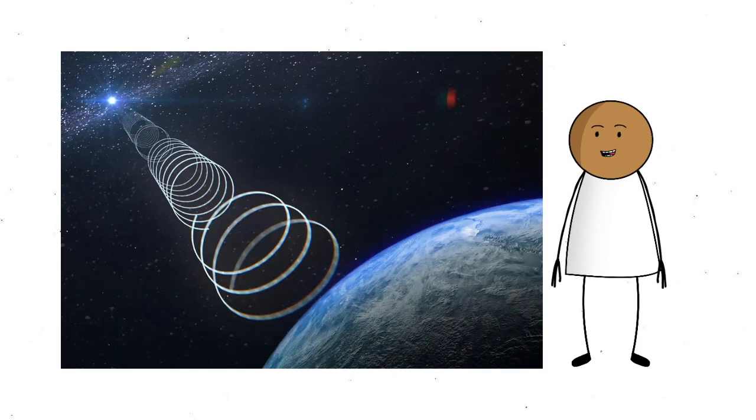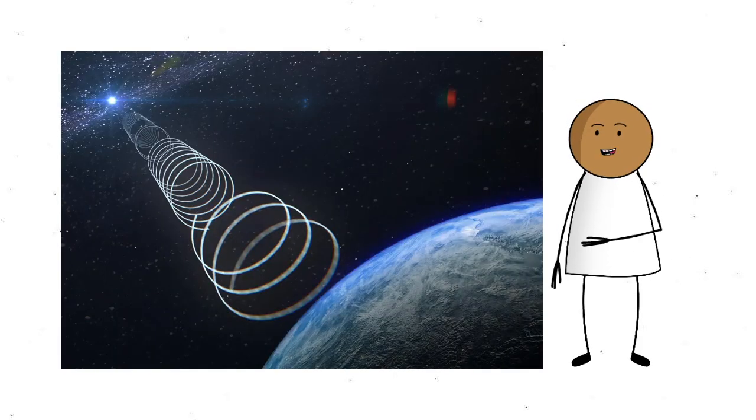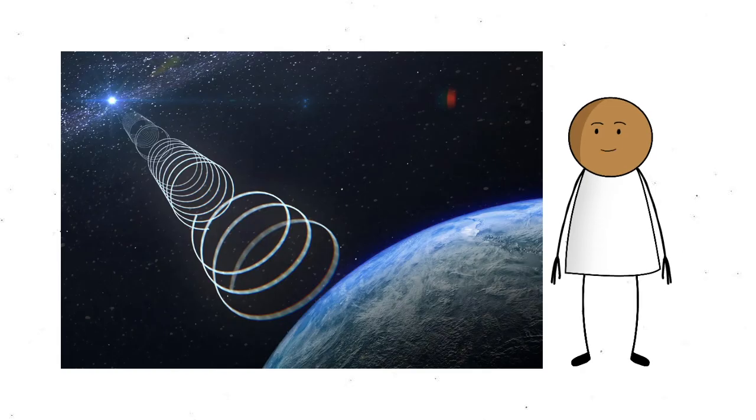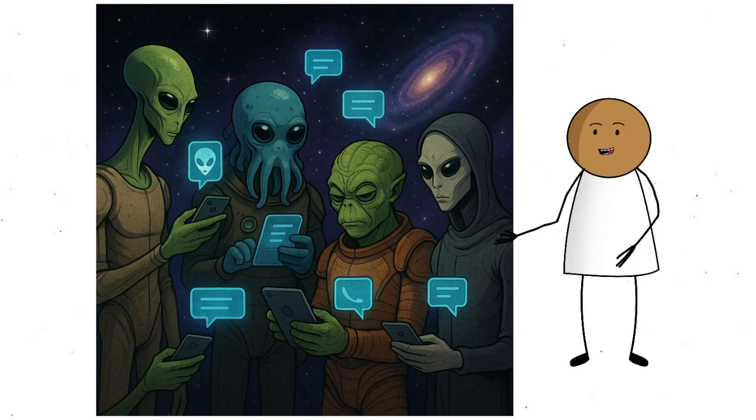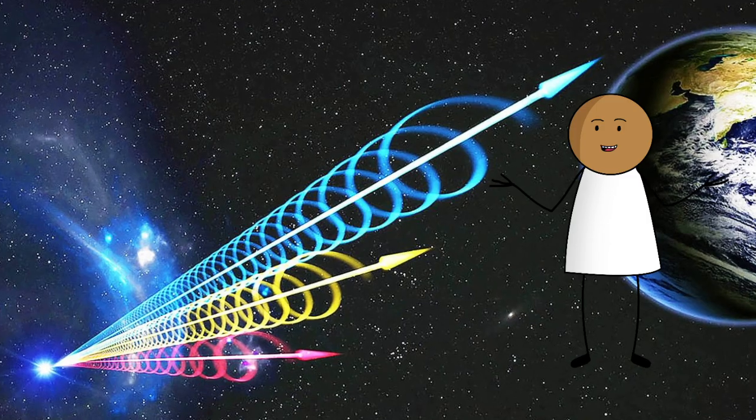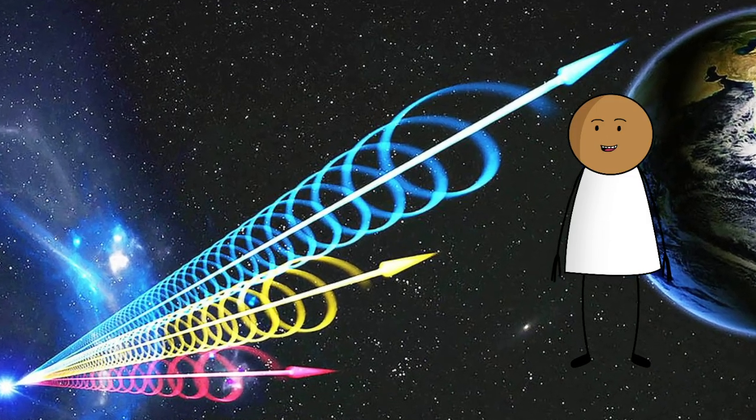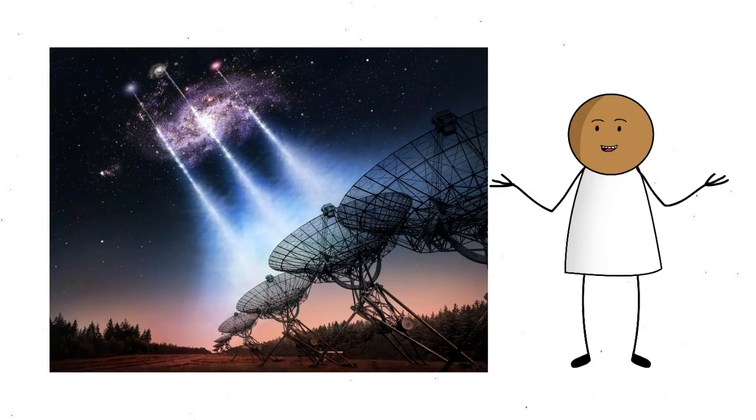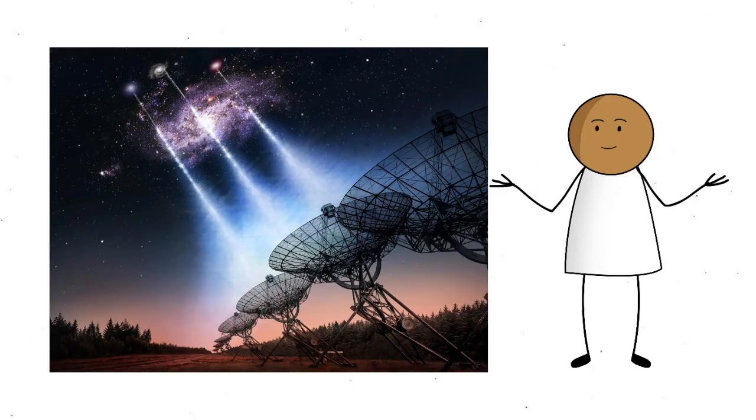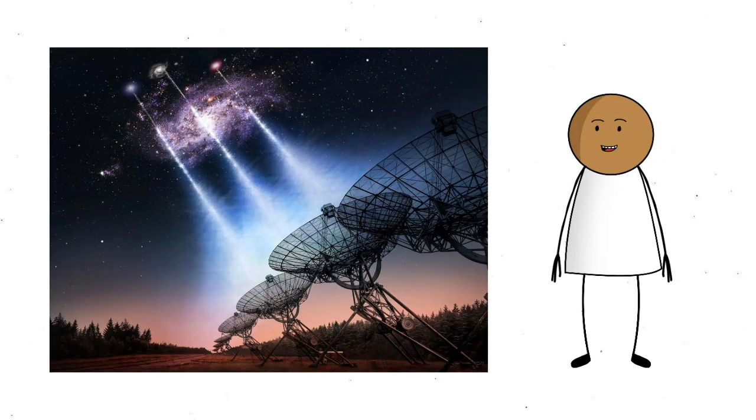Every so often, Earth's radio telescopes pick up something weird. We're not talking about alien mixtapes or a galactic group chat, but mysterious fast radio bursts or FRBs that appear out of nowhere and vanish just as quickly. These bursts are ultra-powerful, last only milliseconds, and often come from billions of light-years away.